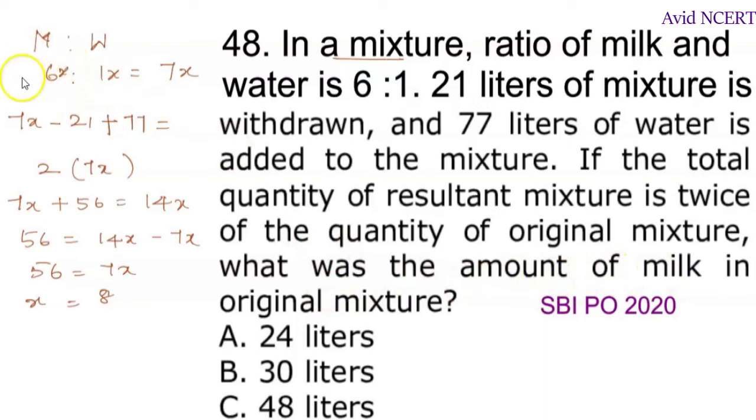So the milk is 6x, that is 6 parts of milk in this total amount of mixture. So 6 into x, which is 6 times x value is 8, so 6 times 8 is 48 liters of milk was there in the original mixture. So the amount of milk in the original mixture is 48 liters.